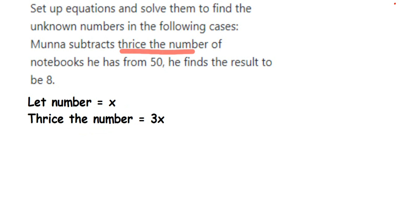I'm going to form an equation now. What is given? Munna subtracts, he's subtracting thrice the number of notebooks he has from 50. So he's subtracting 3x, and thrice the number means 3x from 50. This will be 50 minus 3x because he's subtracting 3x from 50, and then he finds the result to be 8. So this is equal to 8.